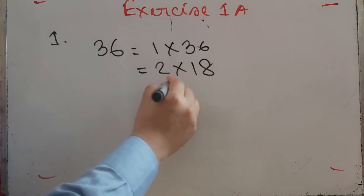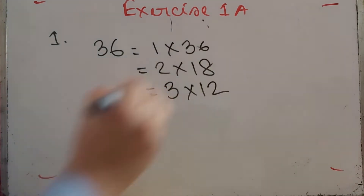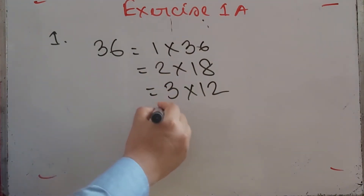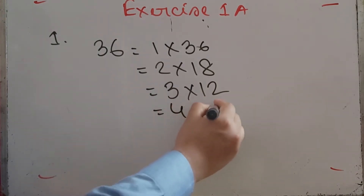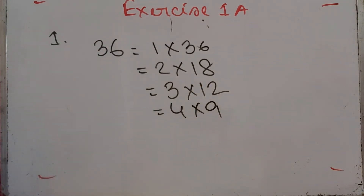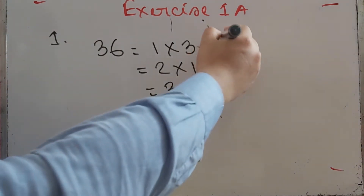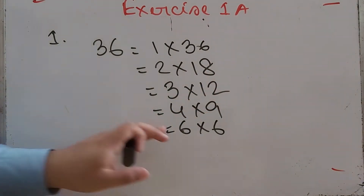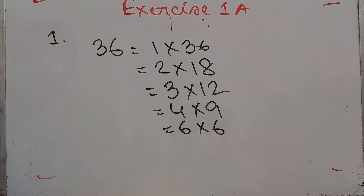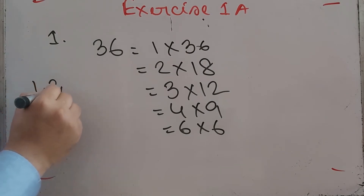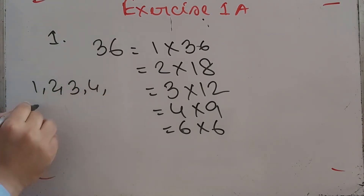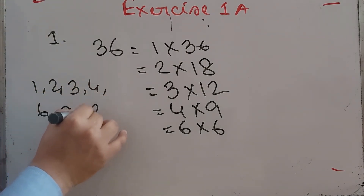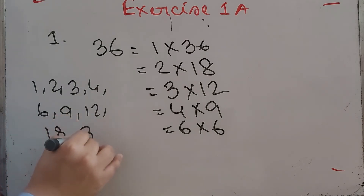Dividing 36 by 3 gives 12, dividing by 4 gives 9, and dividing by 6 gives 6, since 6 times 6 equals 36. So the factors of 36 are 1, 2, 3, 4, 6, 9, 12, 18, and 36.